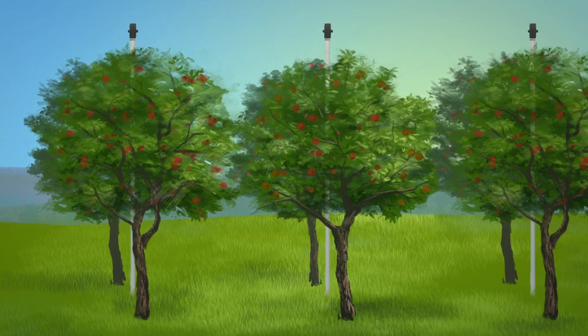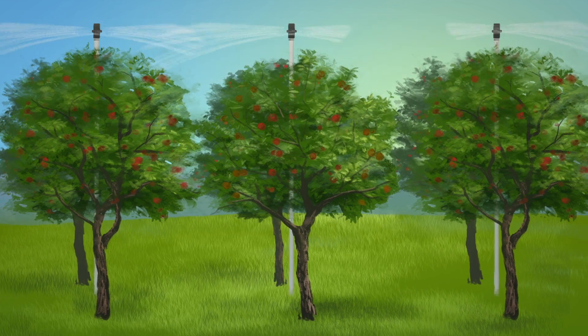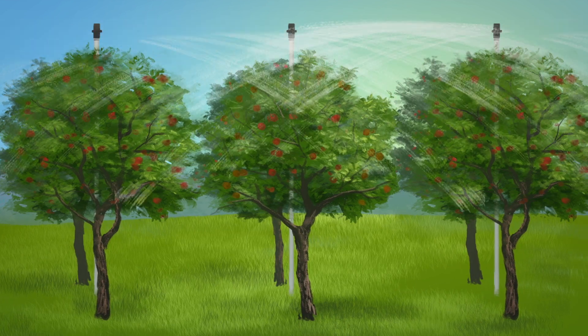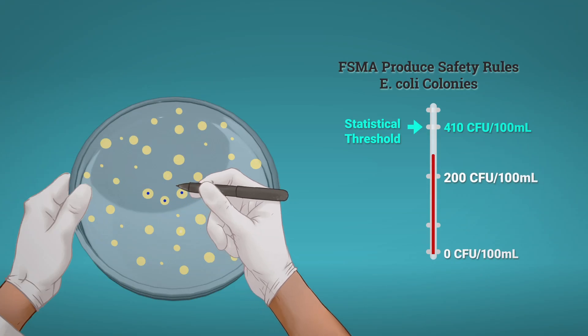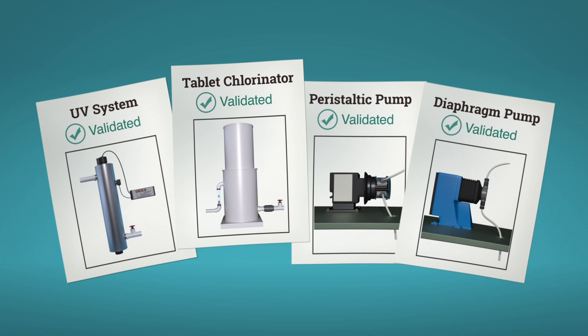When water touches the fruits and vegetables that we eat, we need to make sure that irrigation water is clean so that we reduce the risk of someone getting sick. When our water does not meet the agricultural water standards and the produce safety rule, we can treat it using various methods.